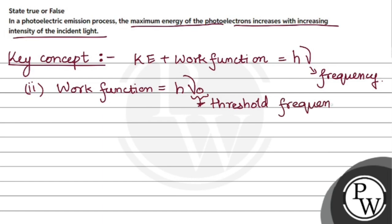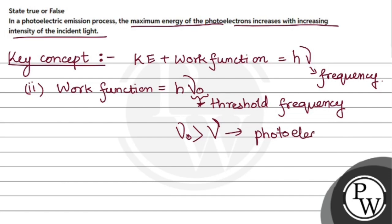This threshold frequency determines photoelectric emission. If the given frequency is greater than the threshold frequency, only then will the photoelectric effect be possible. And h, as we know, is Planck's constant.